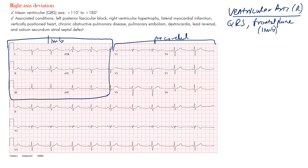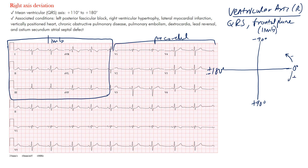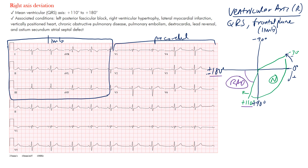You need to know where the leads are placed and our quadrant system. Here's our quadrant system — put this to memory because it's very important. Zero degrees is here, positive 90 degrees here, positive 180 degrees here. Going the other way, this is negative 90 degrees and negative 180. The normal ventricular axis in adults is between negative 30 degrees and about positive 110 degrees. Right axis deviation is a shift rightward, between positive 110 and positive 180.